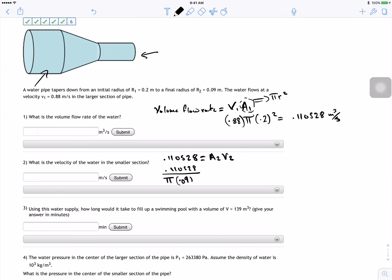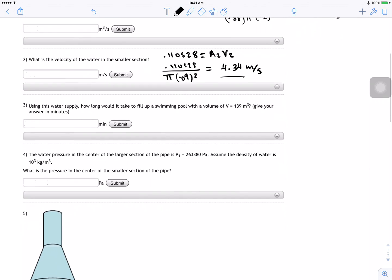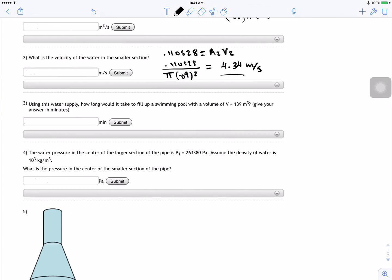And then for this guy I got 4.34 meters per second. All right, it makes sense because we will get larger velocity in the smaller area because the ratio has to stay the same.